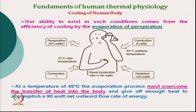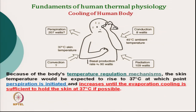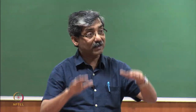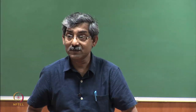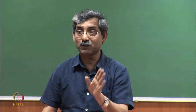At a temperature of 45 degree Celsius, the evaporation process must overcome all the heat we are receiving. Our skin temperature is 37 degree Celsius. The skin temperature would be expected to rise to 37 degree Celsius at which point perspiration will initiate. As the temperature goes on increasing, perspiration will also increase to maintain the skin temperature at 37 degree Celsius if possible. This is the physiological process which will always try to keep the maximum temperature at 37 degree Celsius.